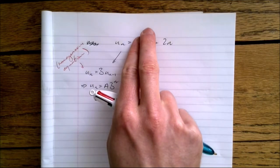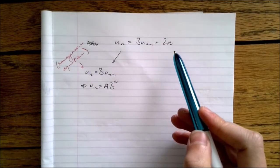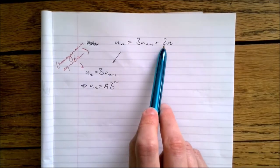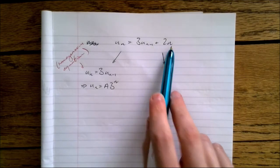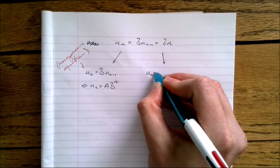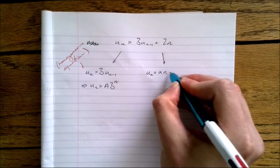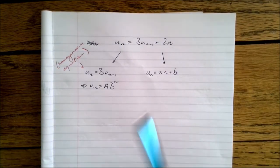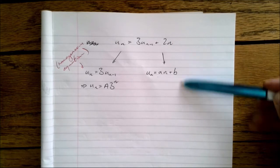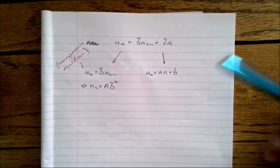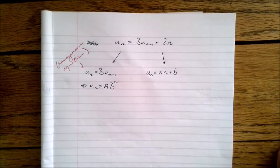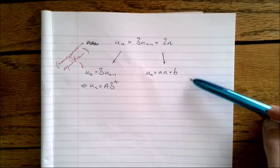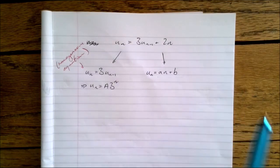Now we're going to ignore the first bit and just guess an answer that will work for the full recurrence. Looking at the '2n' part, I'm going to guess the particular solution is of the form an + b — something linear. I've made that guess because I've done a few of these. There's a table in the textbook giving a list of suitable guesses depending on what the added term is. But if you make a guess and get it wrong, you just try something else. We're making a guess, plugging it in, and seeing if it works.